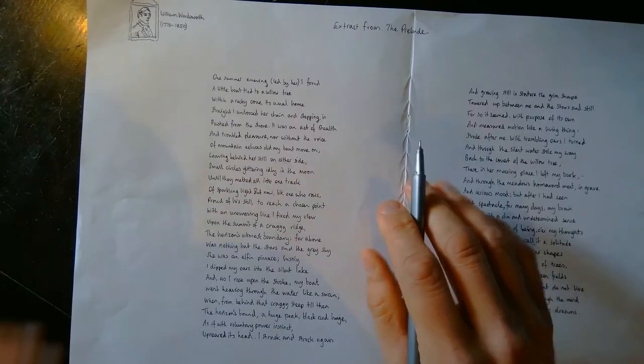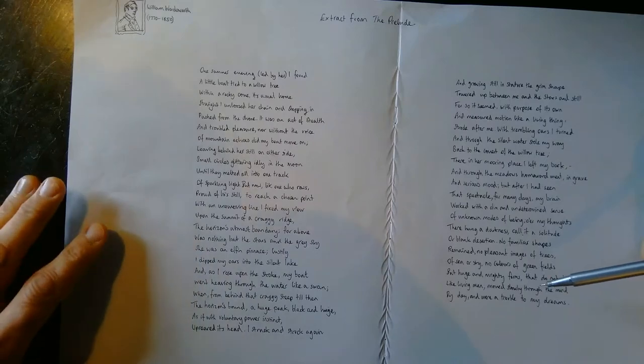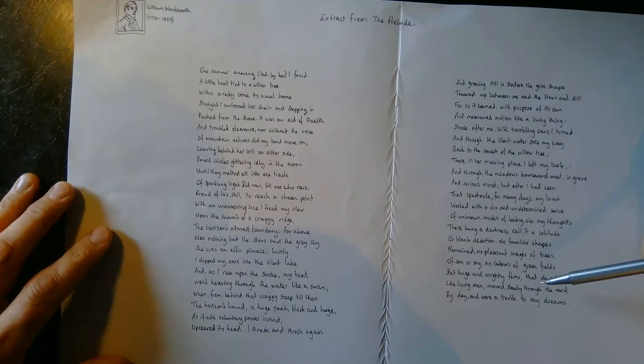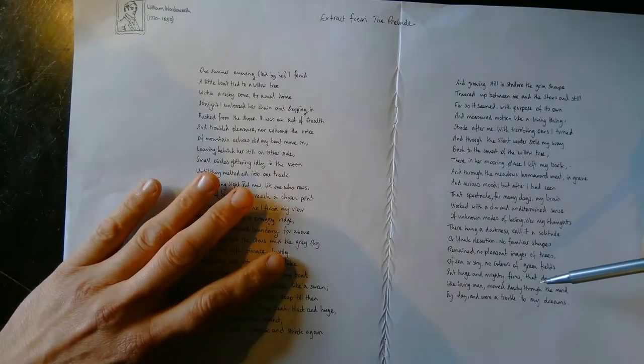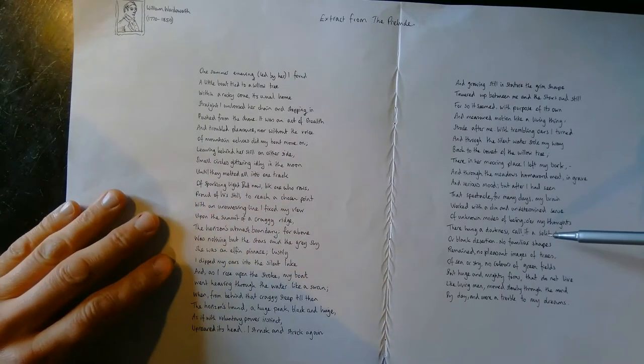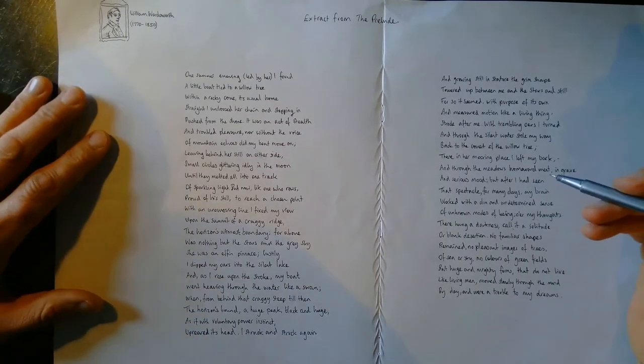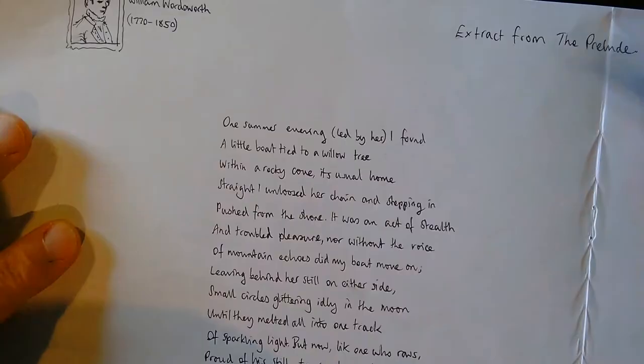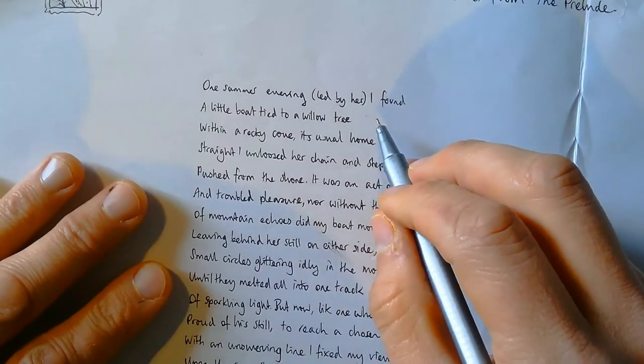But basically this is the poet Wordsworth recollecting what happened to him when he was a child, when he stole a boat and rode out into the middle of a lake, got scared by a distant mountain peak, rode back to the shore and then was left with a very troubled sense of how powerful nature is. So I'm going to zoom in a little bit on this first sentence or so and just dive straight into annotating.